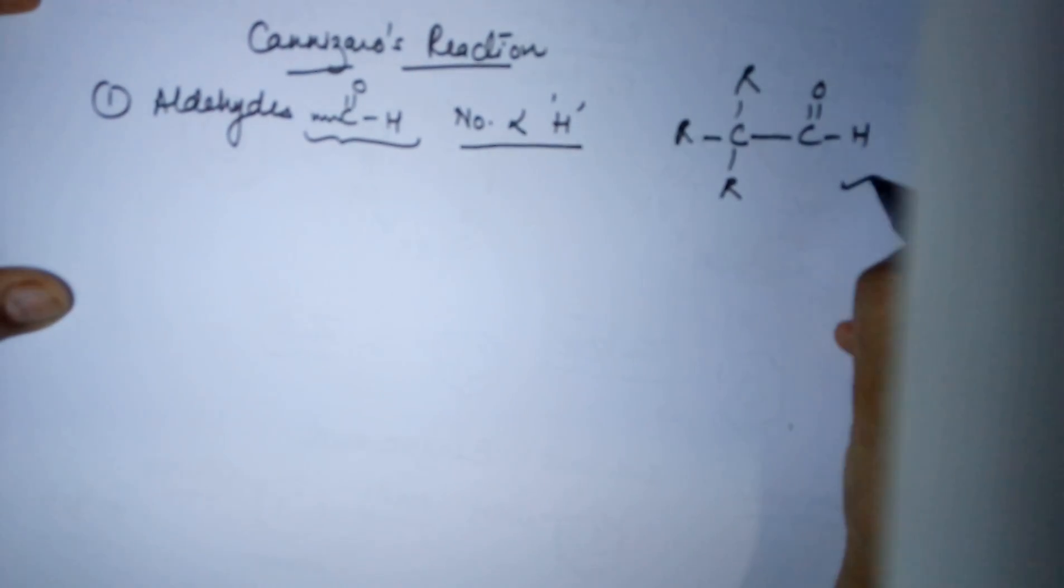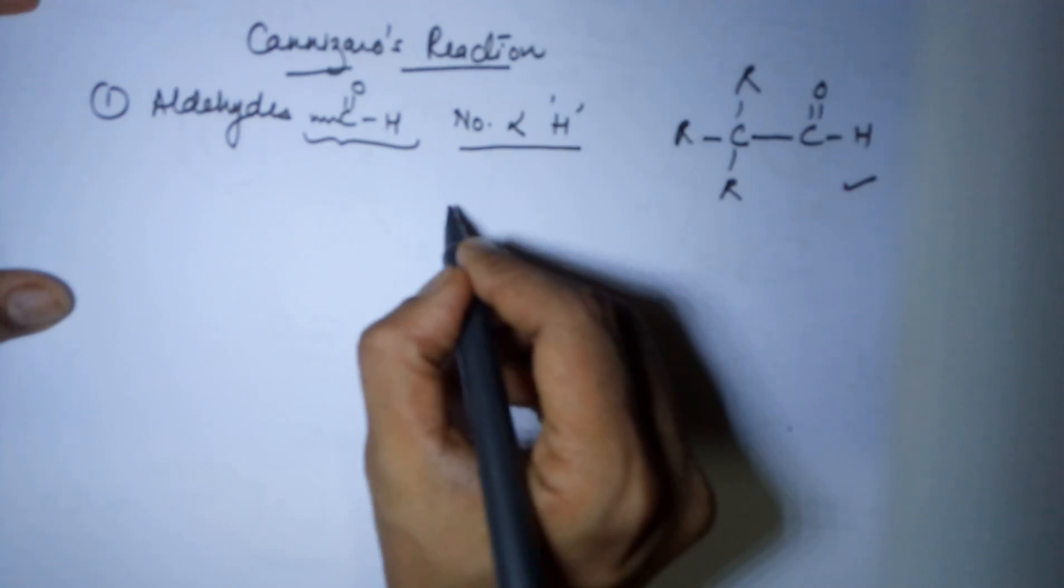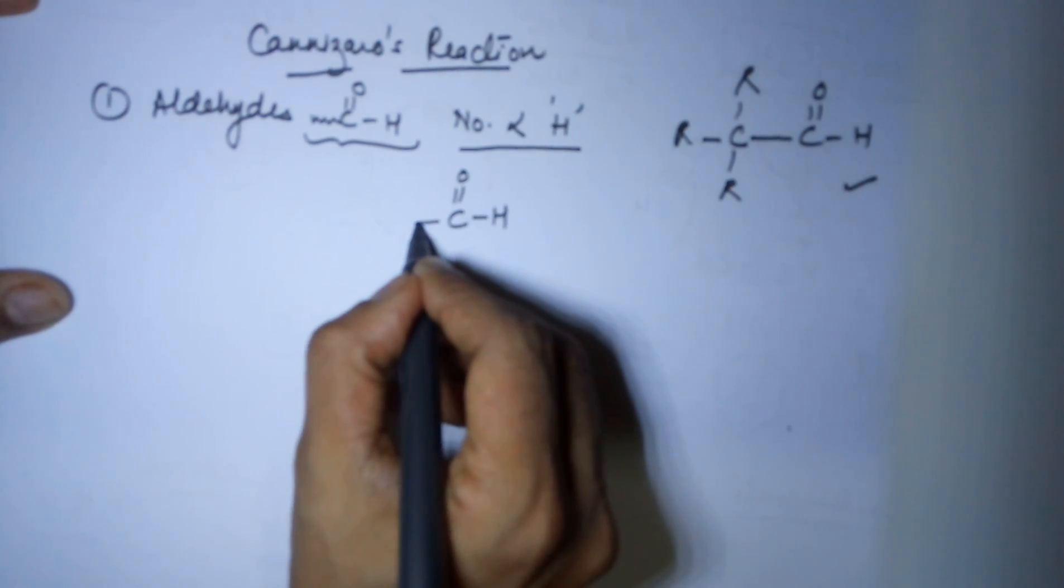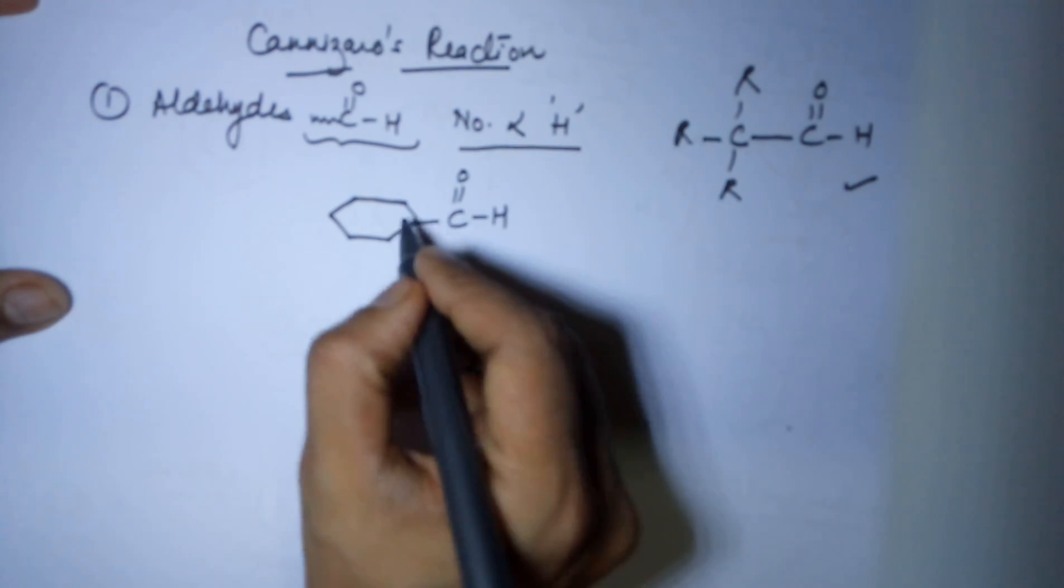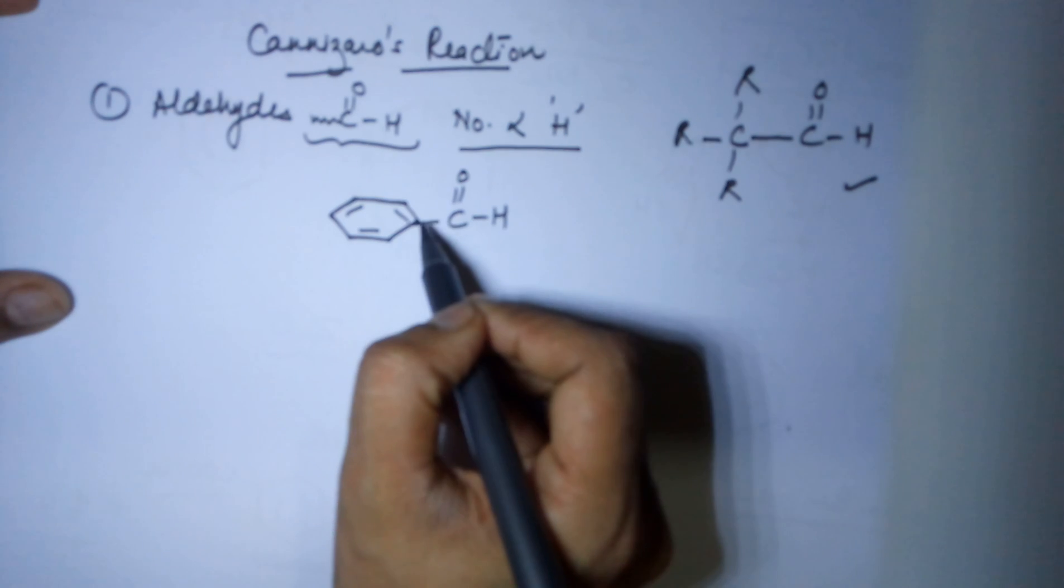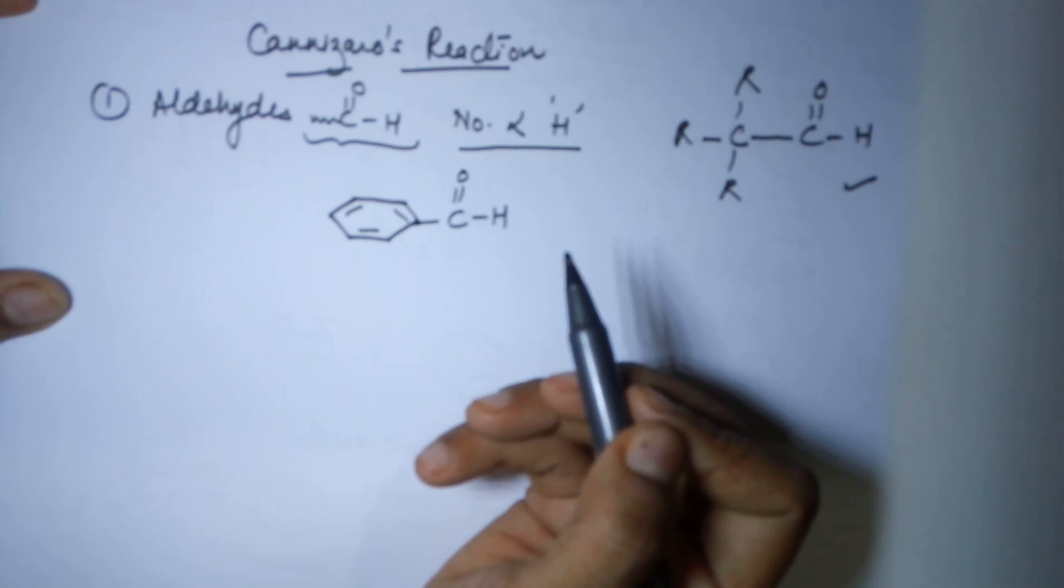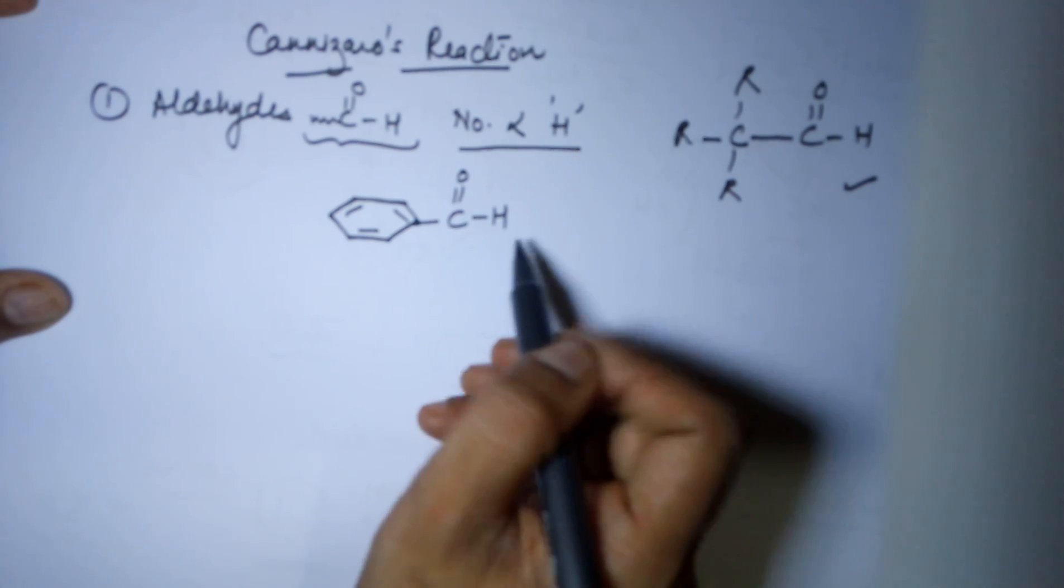The other category could be I have an aldehyde group and then I have a benzene, which means I'm talking about benzaldehyde. Now in benzaldehyde, as you can see, this particular carbon has got already four bonds which means there is no hydrogen bonded to it. Hence this aldehyde also has no alpha hydrogen. This comes under the aromatic aldehydes.